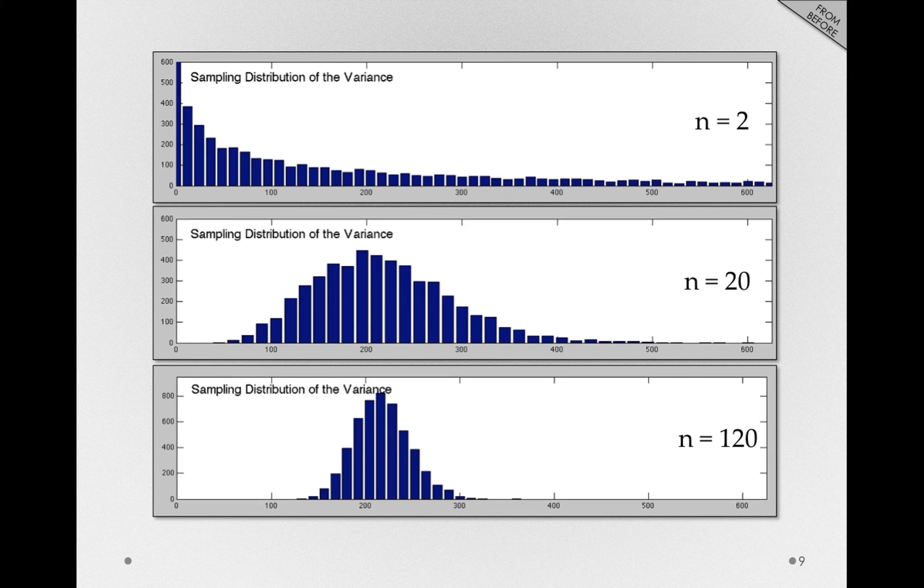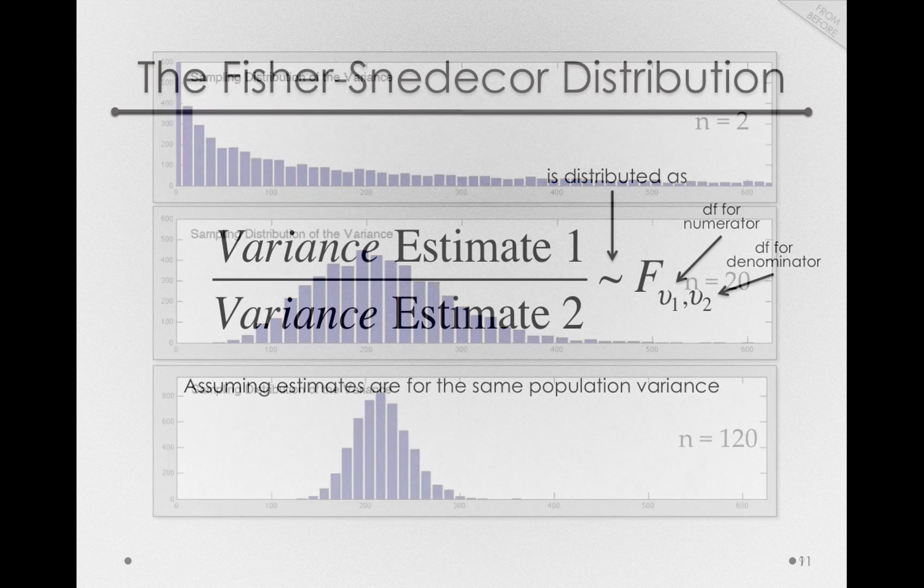Once we got larger samples, that distribution of the variance estimate actually became less skewed. Now, these distributions all have the mean equal to the population variance. That is, we know that our sample estimate of the population variance is unbiased, but that skew is going to be important because it is the skew of the sampling distribution of variance estimates that gives the F distribution its characteristic shape.